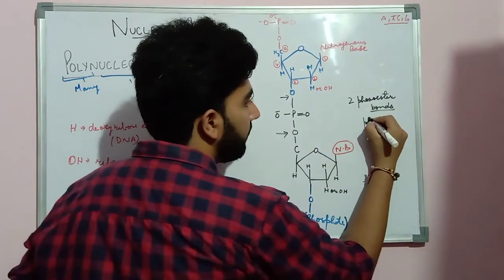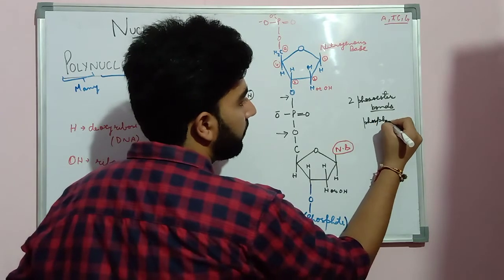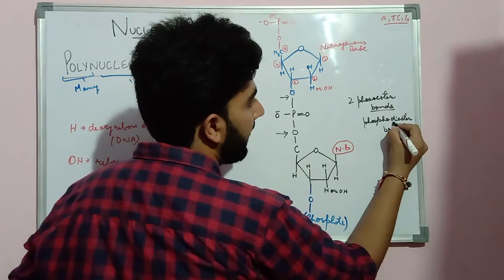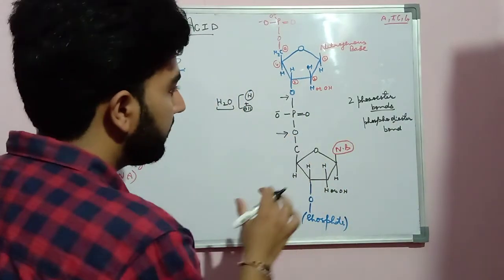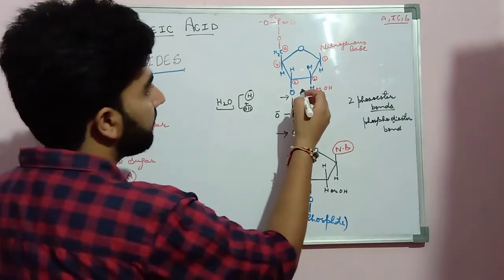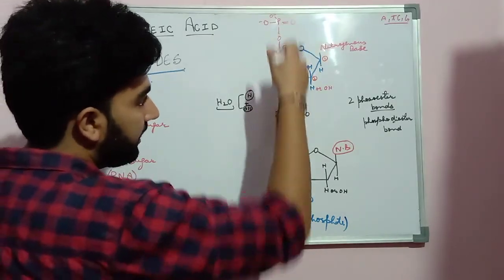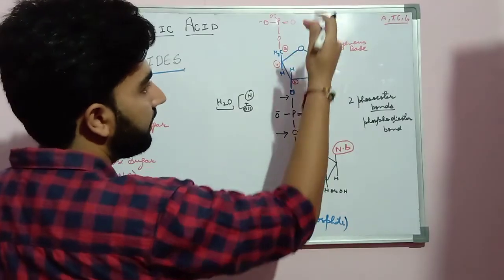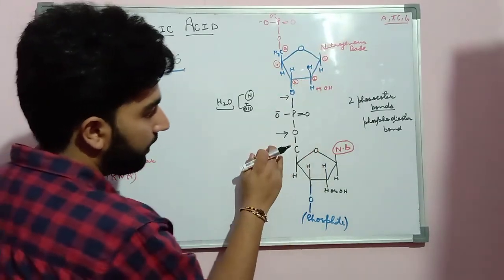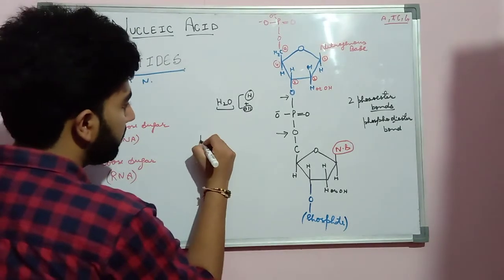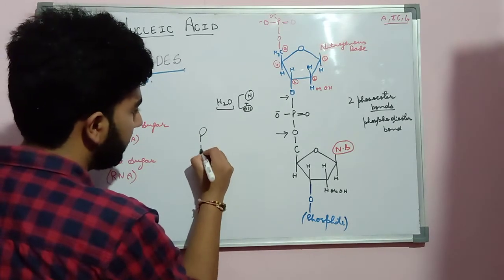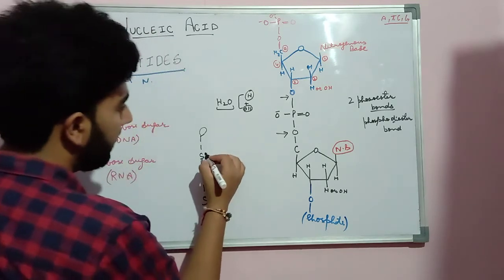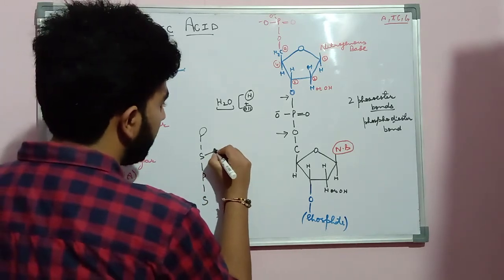These two phosphoester bonds together are also known as a phosphodiester bond — 'di' means two bonds. The sequence of nucleotides is arranged such that: phosphoric acid, then sugar, then phosphoric acid, then sugar again. This phosphoric acid-sugar-phosphoric acid-sugar backbone continues, and each sugar combines with a nitrogenous base.